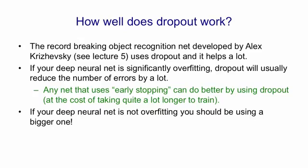If you've got a deep neural net and it's not overfitting, you should probably be using a bigger one and using dropout. That's assuming you have enough computational power.